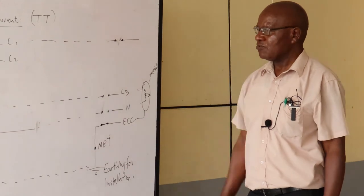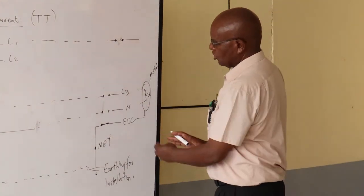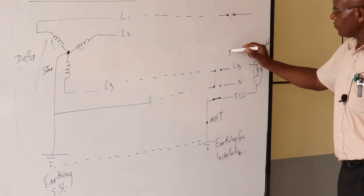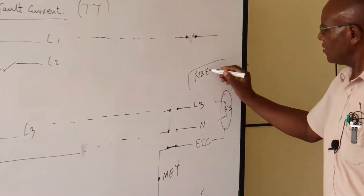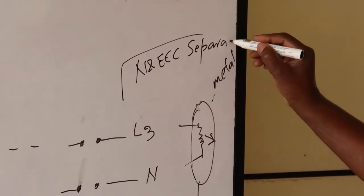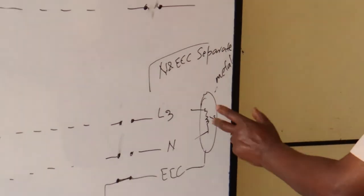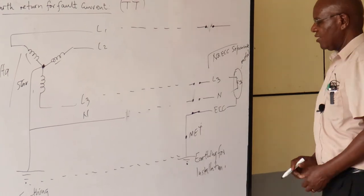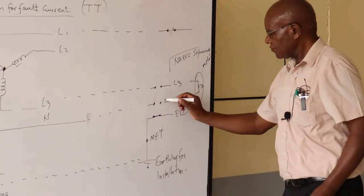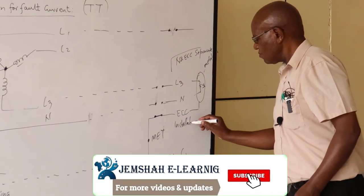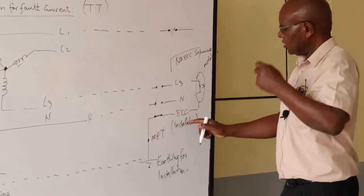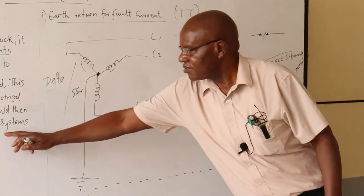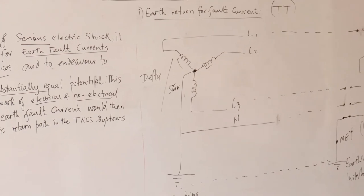On the installation side, although both the neutral and the ECC are earthed, inside the installation they should be separate — they should not touch. The neutral here is connected to the ground at the substation, and the ECC is connected to the ground at the installation. One of the IEE recommendations is that once inside the installation, the ECC and the neutral should be kept separate.